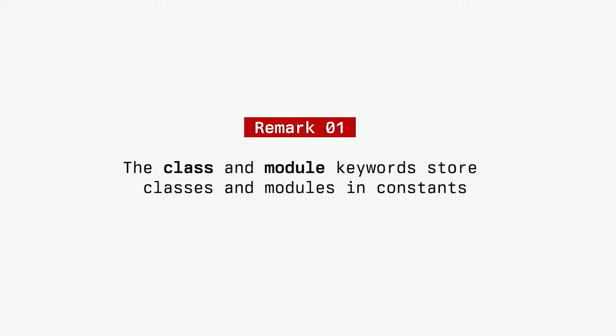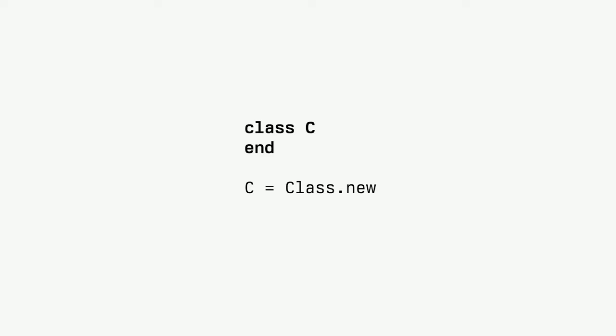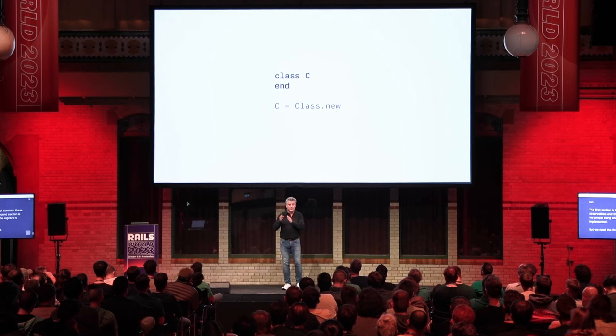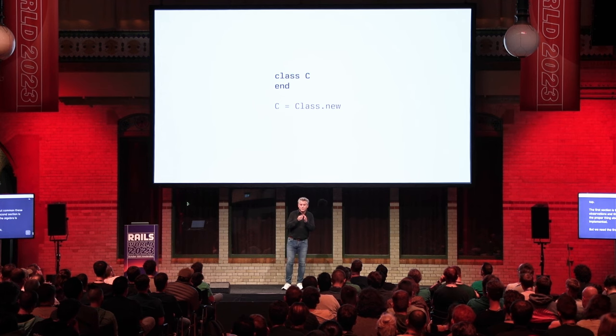The first thing: the class and module keywords create constants — they store the classes and modules that get defined in constants. This is a very unique thing in the Ruby programming language. For instance, writing 'class C' is doing what the second chunk does: you create a class object with Class.new and assign that object to the C constant.